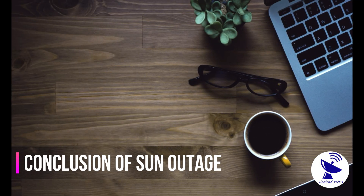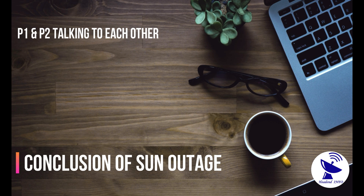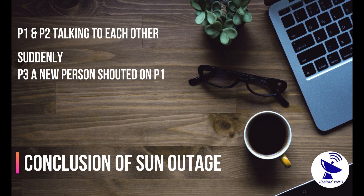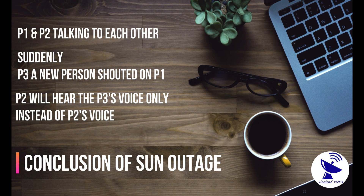Sun Outage comes due to the perfectly aligned position of Sun, satellite, and receiving antenna. It comes twice in the year for a few days, for around 12 minutes, which results in loss of signal in the receiving antenna. It is due to interference of the Sun's thermal noise with the satellite signal. Working of this interference is like this: for example, two persons are talking to each other, P1 and P2, and suddenly a third person P3 shouts at person P1. Then the second person P2 will hear only P3's voice instead of P1's voice.